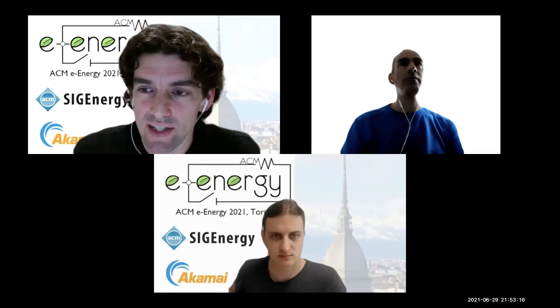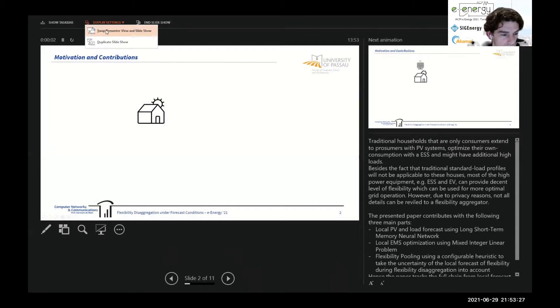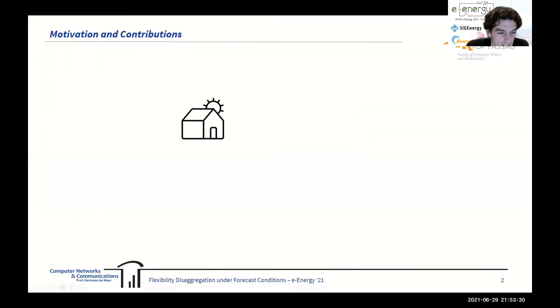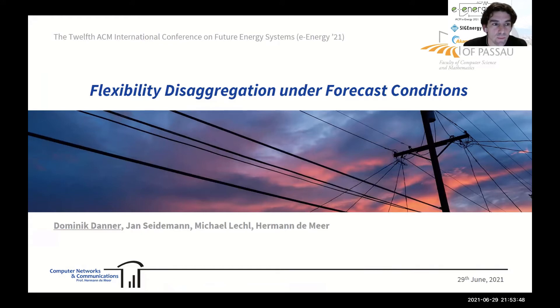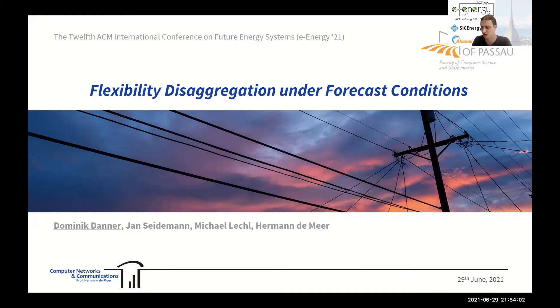We'll move on to the second talk, a full paper: 'Flexibility Disaggregation Under Forecast Conditions.' Dominic Denner received his BSc and MSc in computer science from the University of Passau in 2014 and 2017 respectively. He is doing his PhD at the Chair of Computer Networks and Communications, working on energy-related research including future energy systems, distributed smart grid algorithms, and fair control mechanisms for distributed storage and electric vehicles.